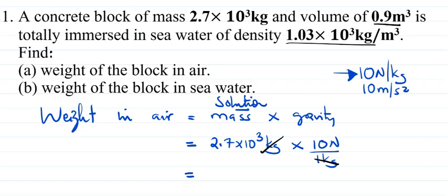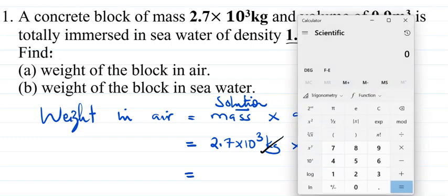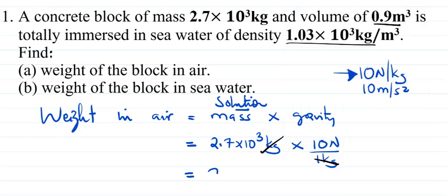So 2.7 times 10 to the power 3, multiply by 10, gives us 27 times 10 to the power 3. We put that as 27 times 10 to the power 3 newtons.